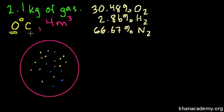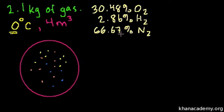The problem tells us we have 2.1 total kilograms of gas. And of that, by mass, 30.48% is oxygen, 2.86% is hydrogen molecules, and 66.67% is nitrogen.